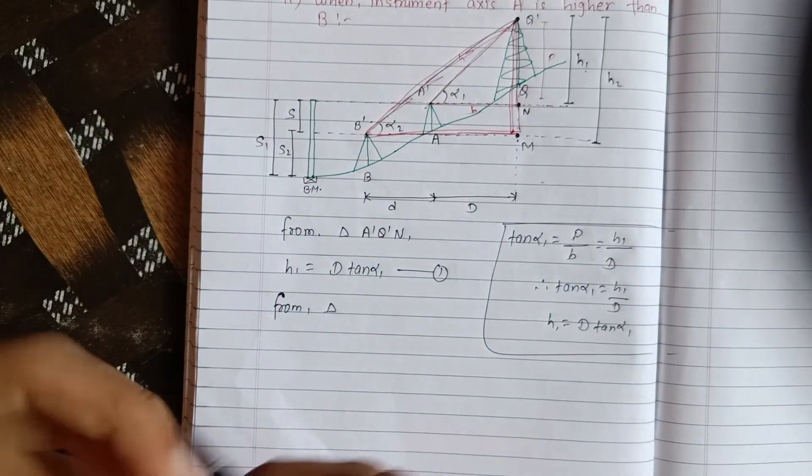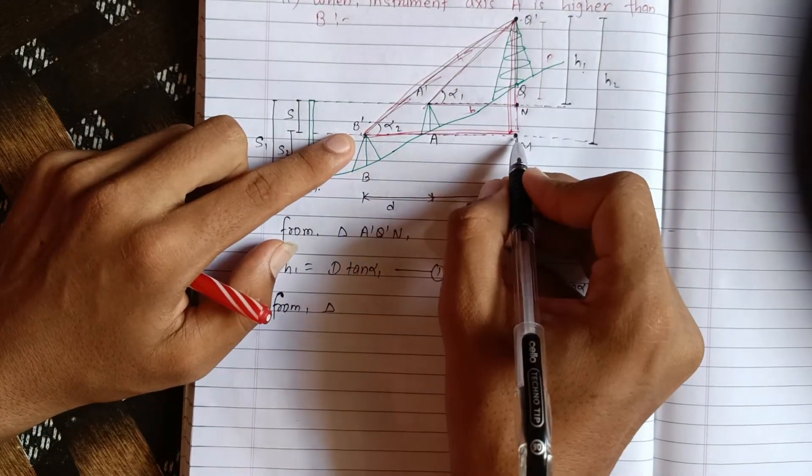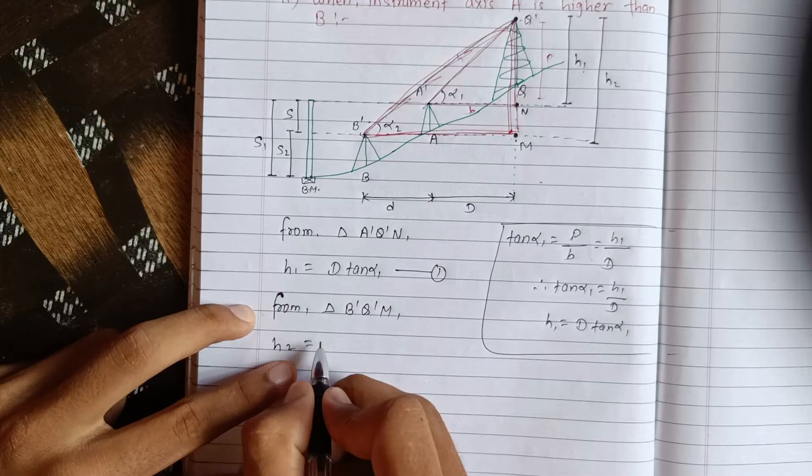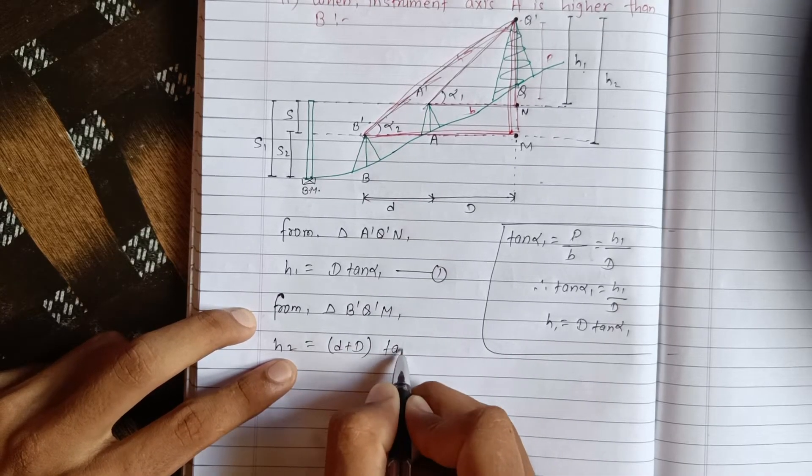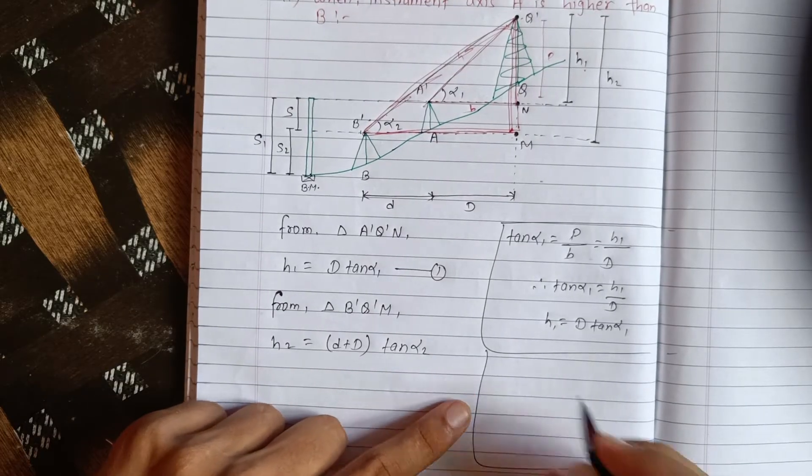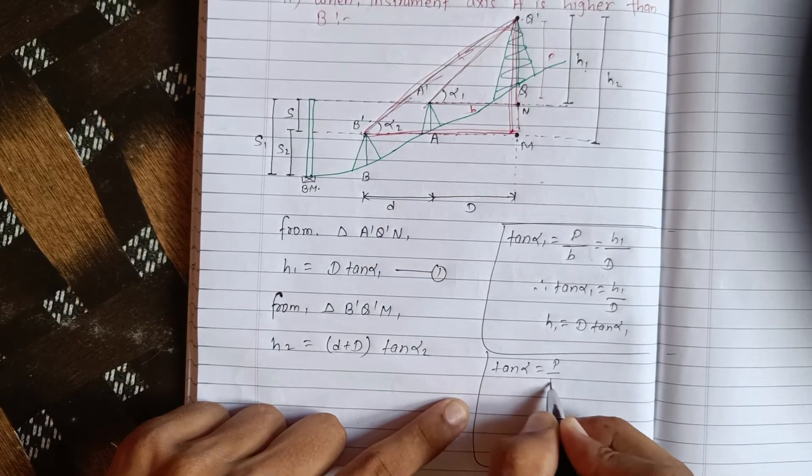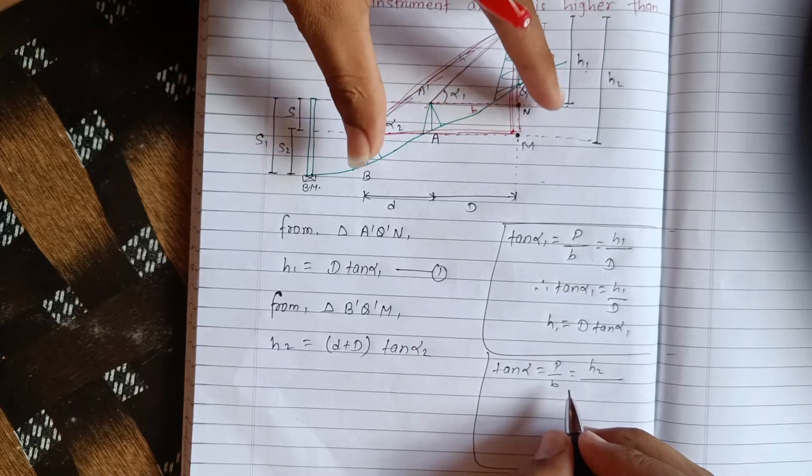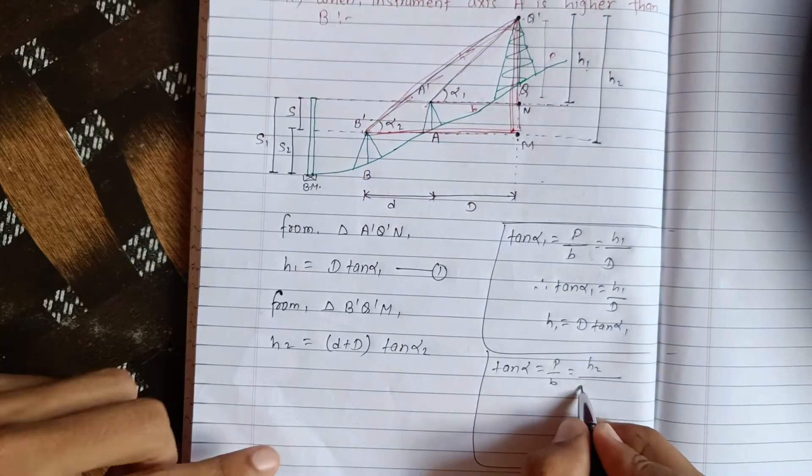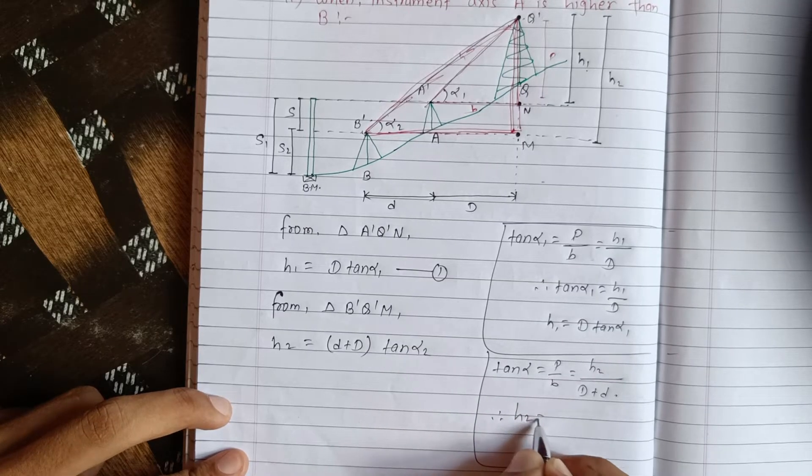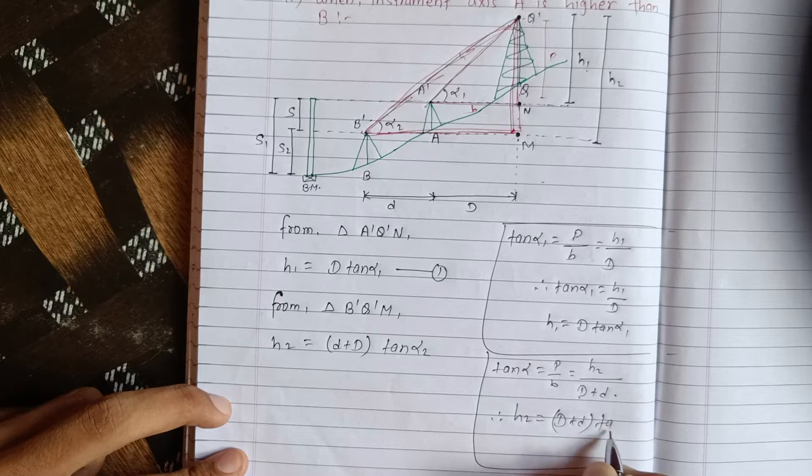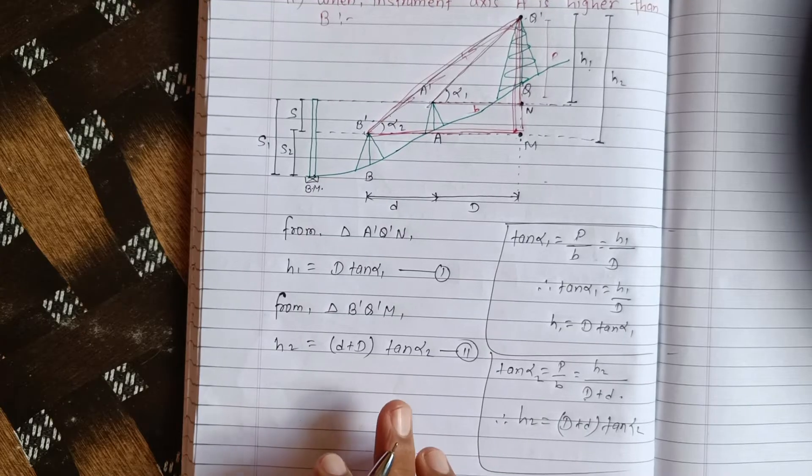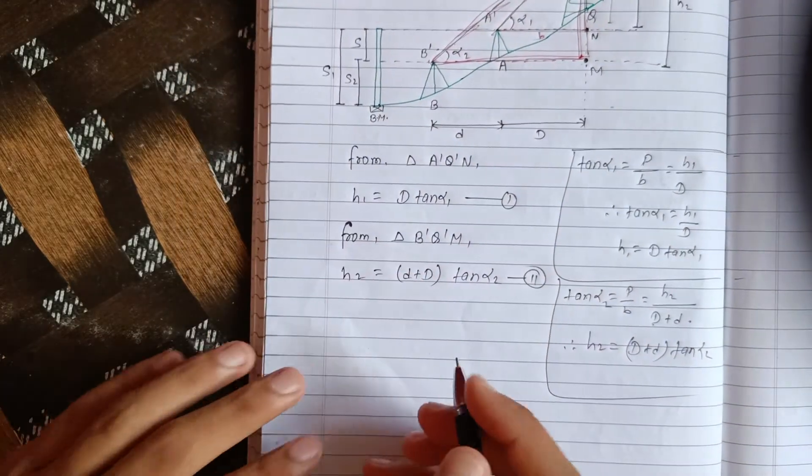From triangle BQM, S2 equals S upon D plus D tan alpha 2. The same process applies - tan alpha 2 equals P by B. Therefore S2 equals S cross-multiplied, giving us D plus D tan alpha 2. This becomes equation two.